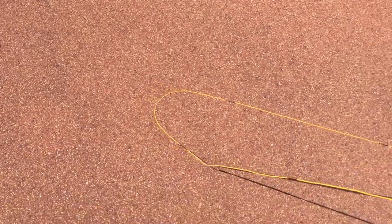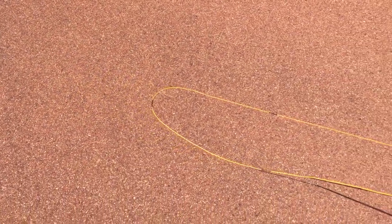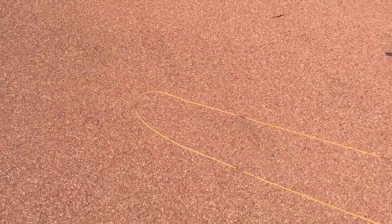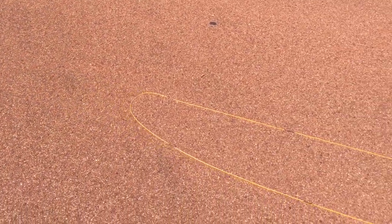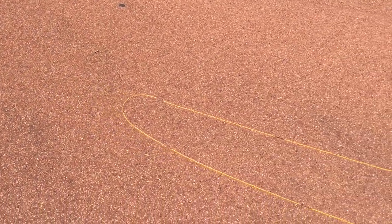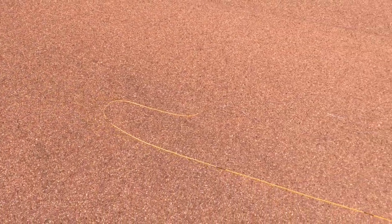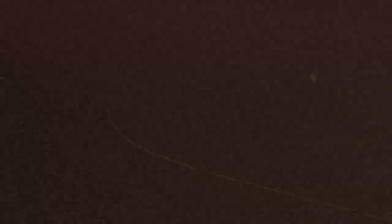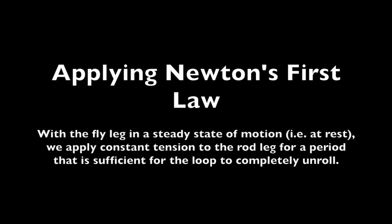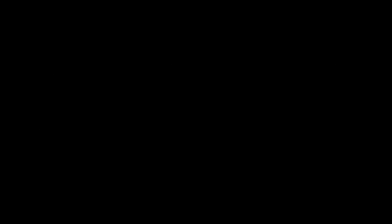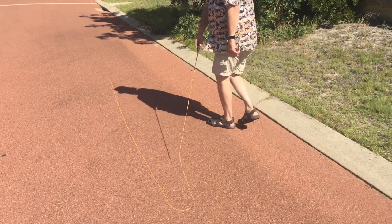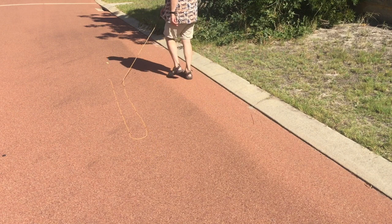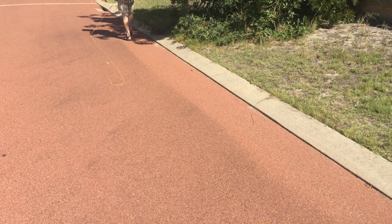Now that's a really important point, so I'm going to say it again: you don't need to do anything to the fly leg except apply tension through the rod leg to make a loop. During the cast, it's the momentum of the moving mass in the fly leg that produces tension in the rod leg. I'm going to apply Newton's first law here and have the fly leg stationary — a steady state of motion — and then apply a force to it in the form of tension through the rod leg. As expected, the fly leg maintains the steady state of motion until it is acted upon by the force exerted by the rod leg.